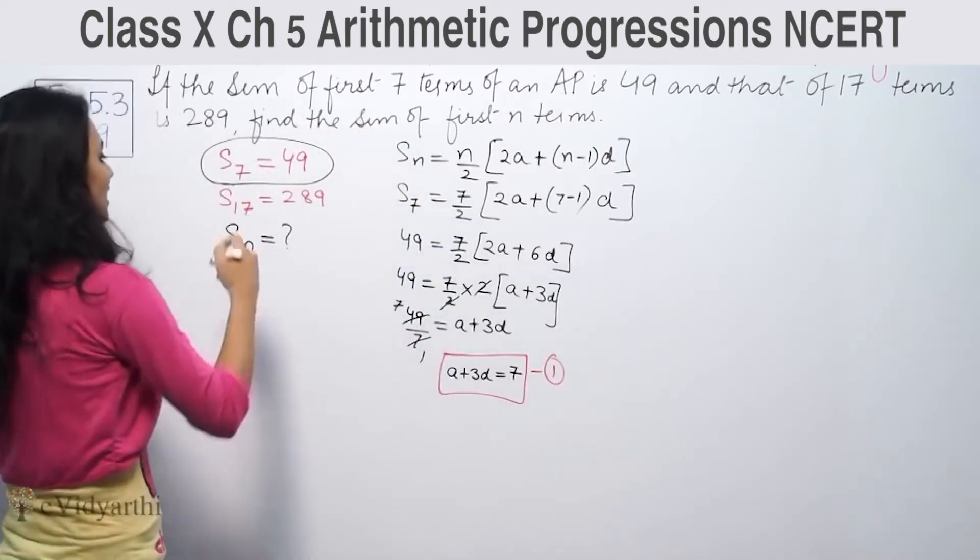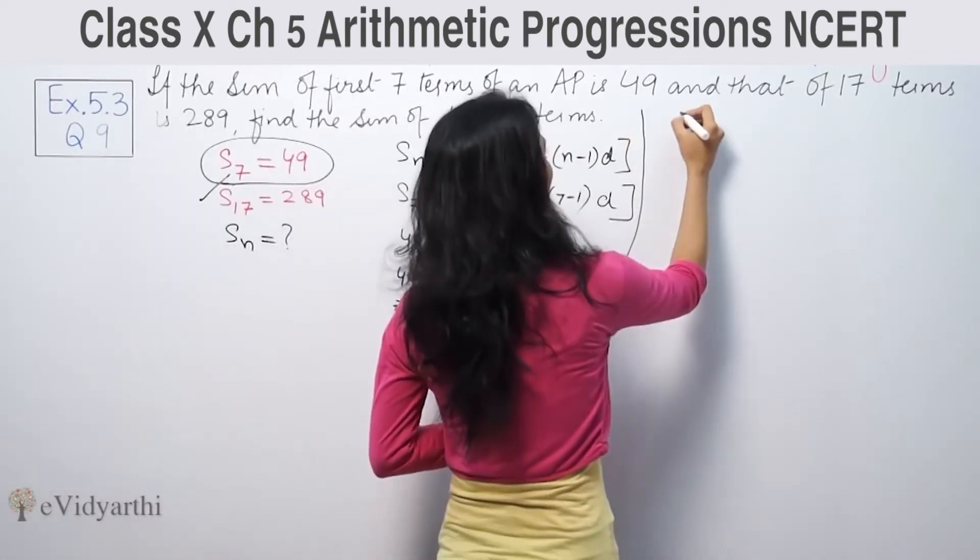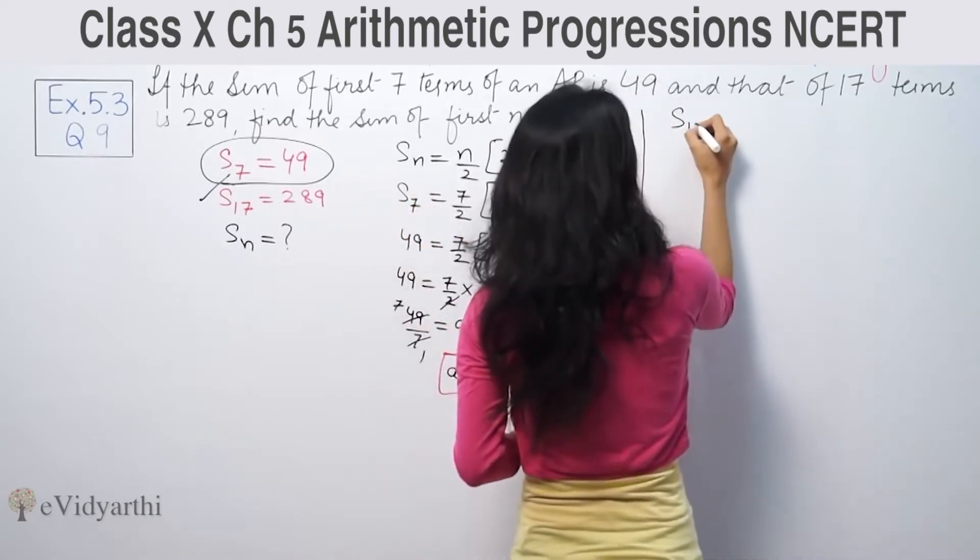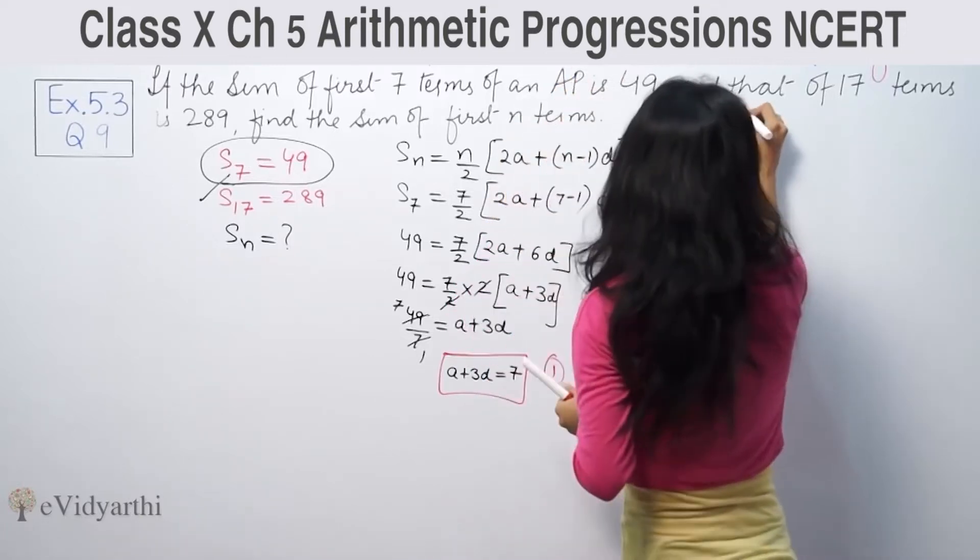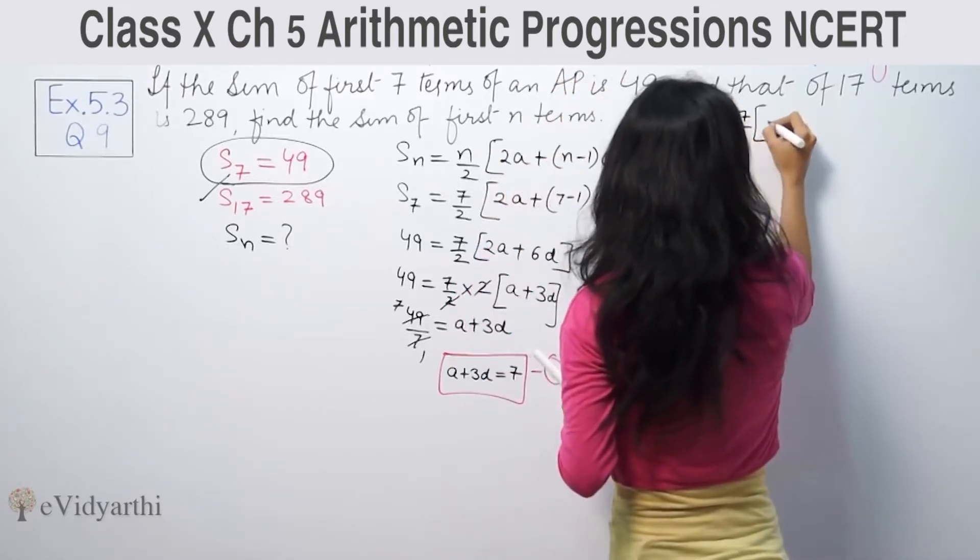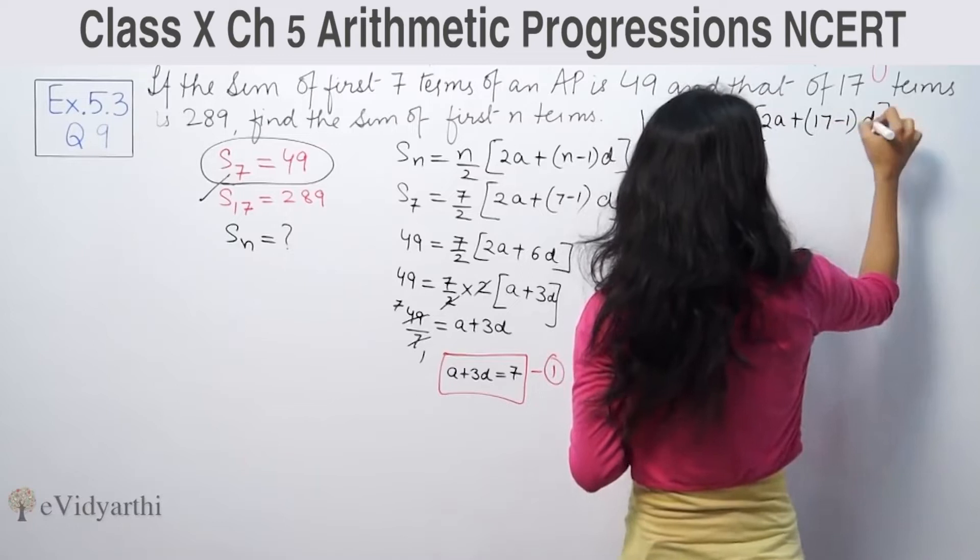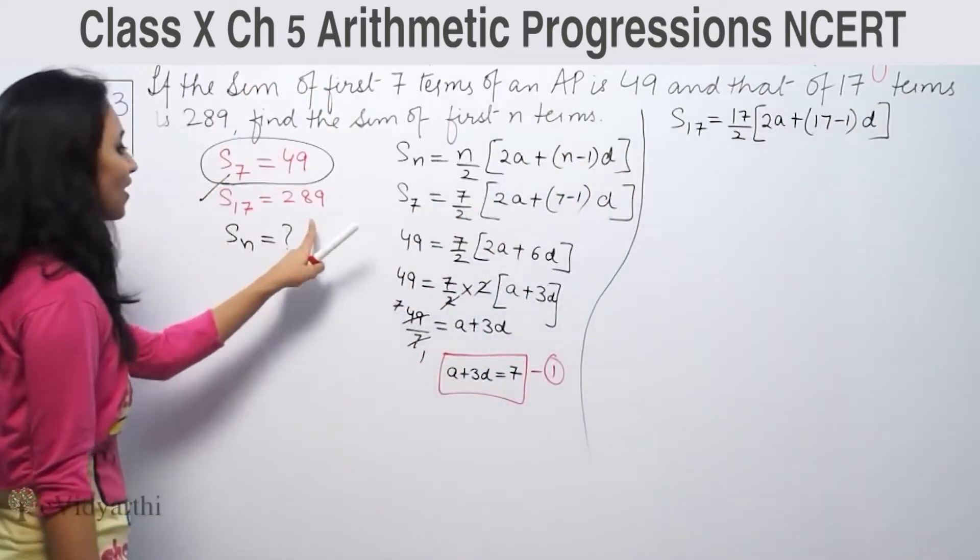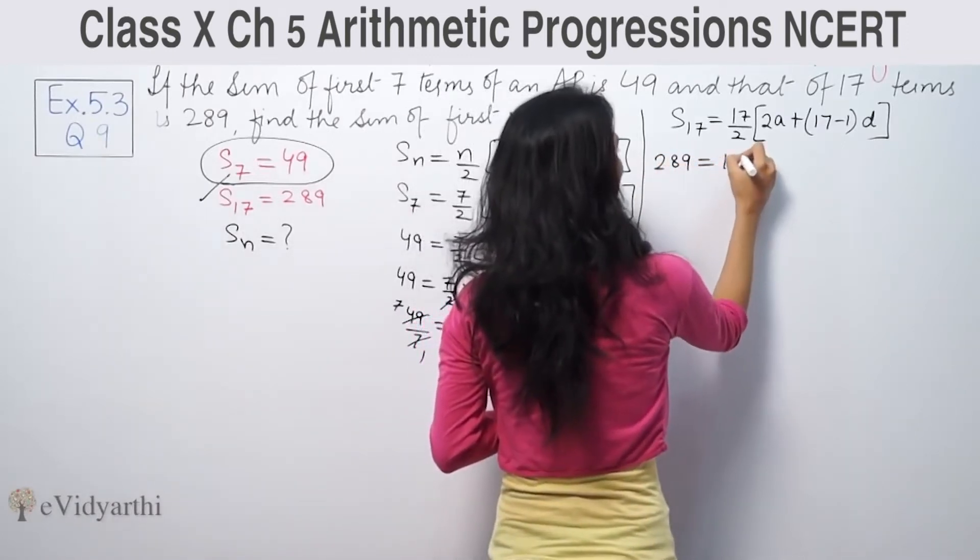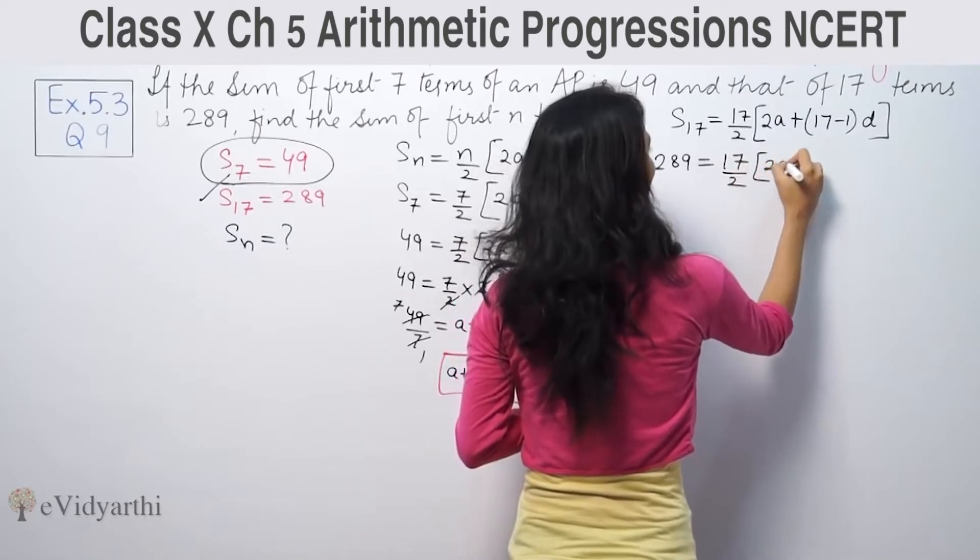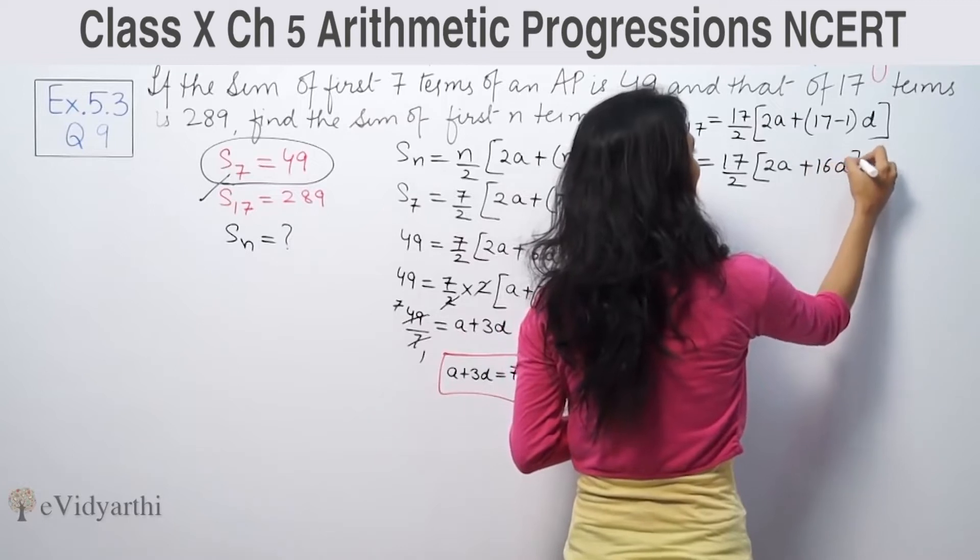Now, same way we use S17. In the Sn formula, we put n = 17. So we write 289 = 17/2[2a + 16d].